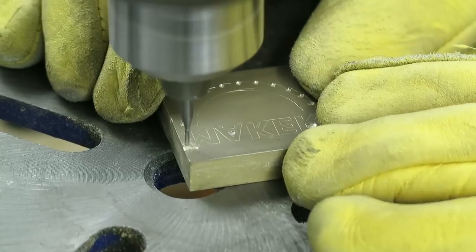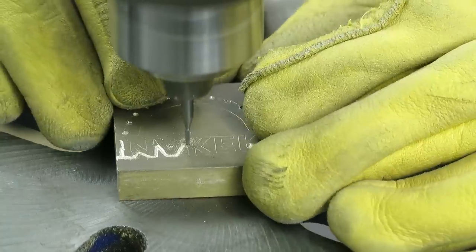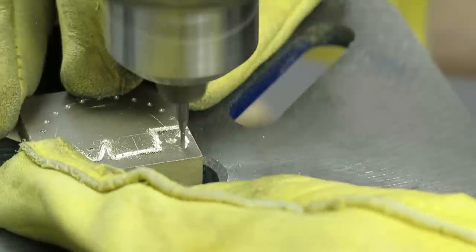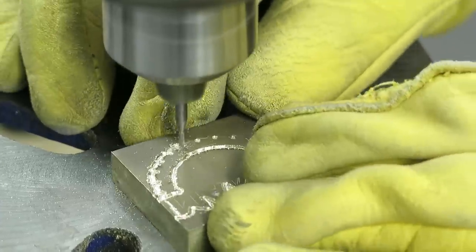I used Dremel high speed steel engraving and carving bits to carve the outside area of the logo but I decided to use them in the drill press at a slower speed.